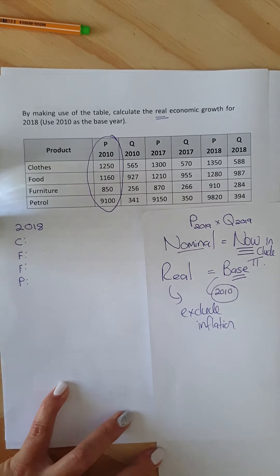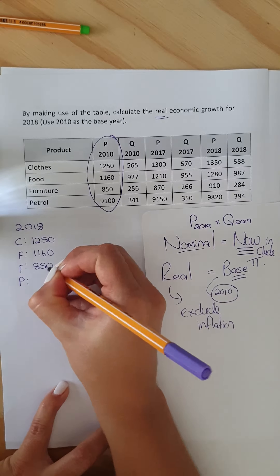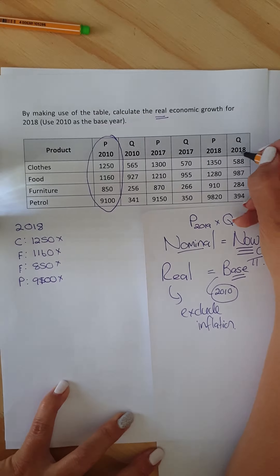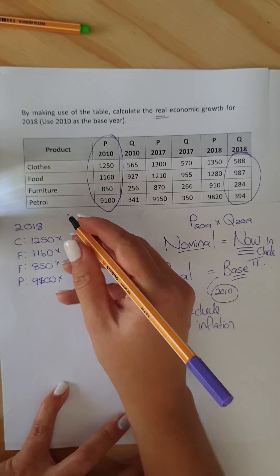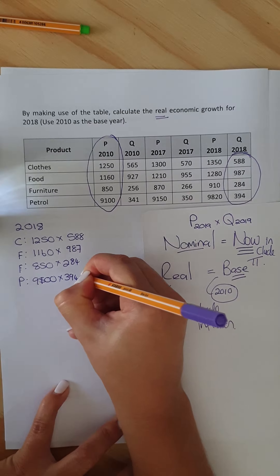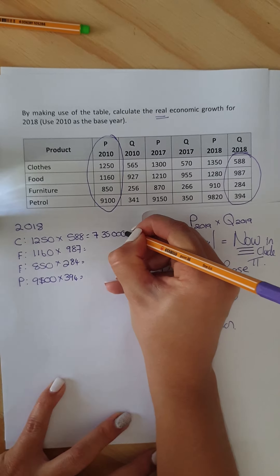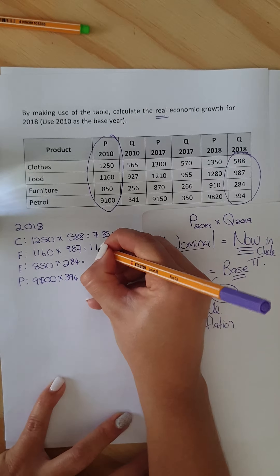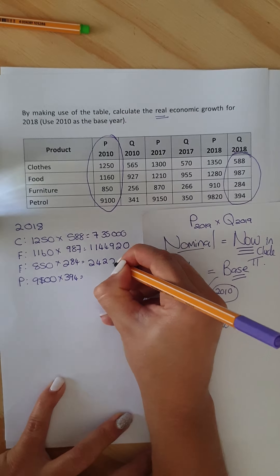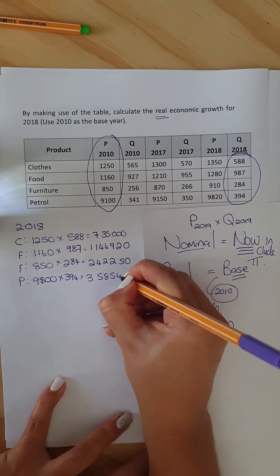We take the prices of the base year — because we use real GDP, we use 2010 prices. For clothes it's 1250, and for food, furniture, and petrol it's 9100. We multiply by the current quantities for 2018: 588, 987, 284, and 394. When we multiply these through, we get 735,000 for clothes, 1.1 million for food, and 242,000 for furniture.